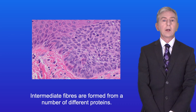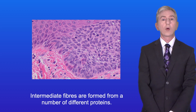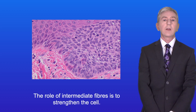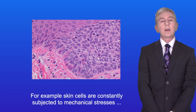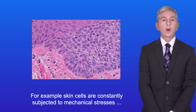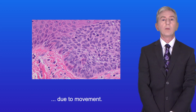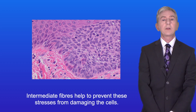Intermediate fibers are formed from a number of different proteins. The role of intermediate fibers is to strengthen the cell. For example, skin cells are constantly subjected to mechanical stresses due to movement, and intermediate fibers help to prevent these stresses from damaging the cells.